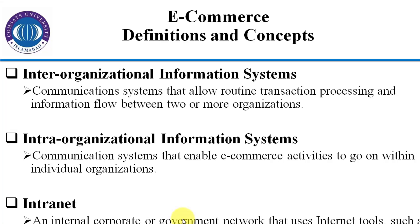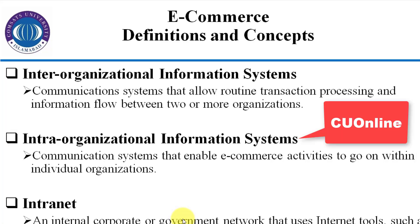In COMSATS University, we use the system to connect all seven campuses. It is used to update student attendance, share lecture notes, and coordinate across various departments at multiple levels. The Vice Chancellor of COMSATS University can know everything about the other campuses with just a click — for example, whether a teacher has delivered a lecture or not.